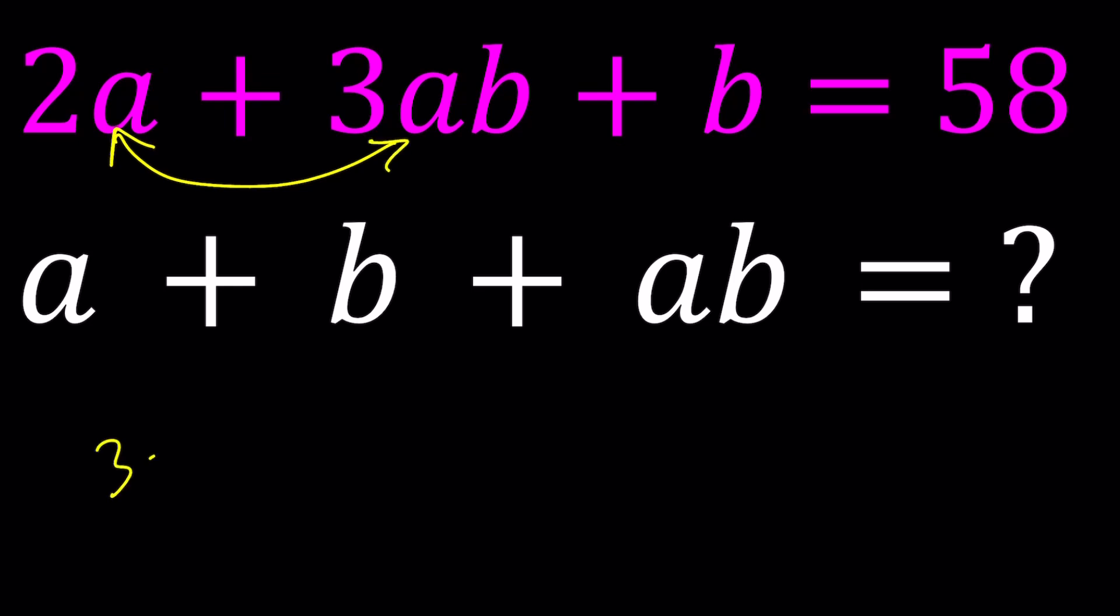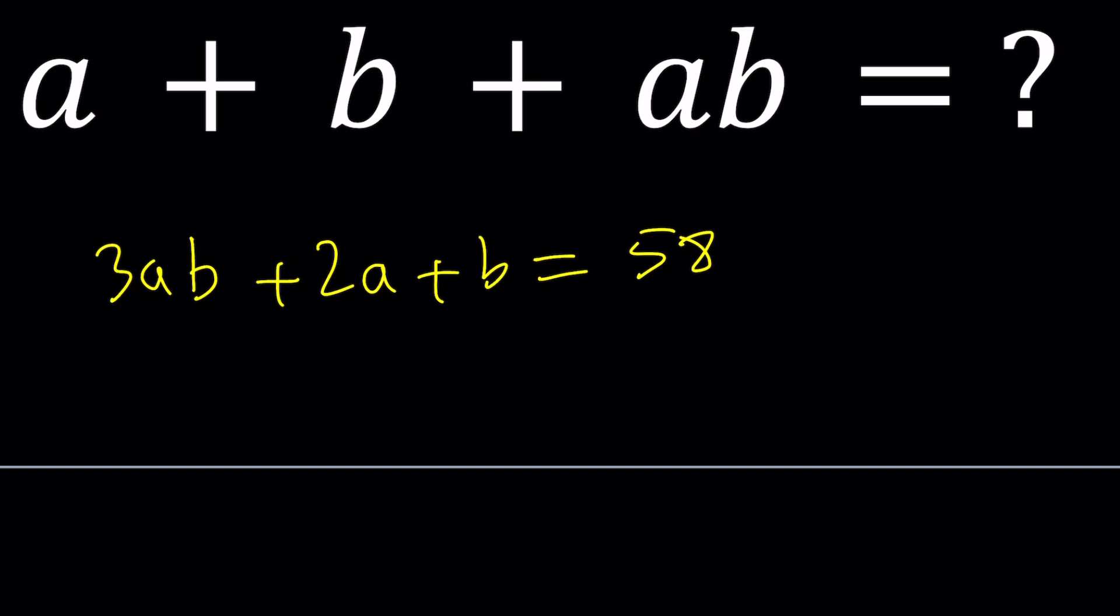So, let's go ahead and start by switching these terms around. So, 3ab plus 2a plus b equals 58. And then I'm going to go ahead and take out an a, and that's going to give me 3b plus 2, and then it's going to be followed by b. Now, the issue here is, I don't have a 3b, I only have one b. Can I still take out the b? Yes, I can. Let me show you how we can do this with this method, and then I'll show you an alternative approach.